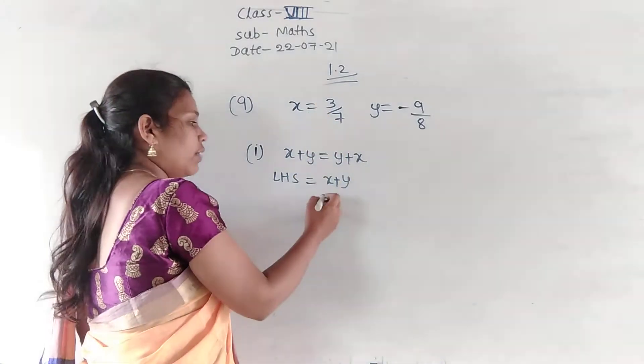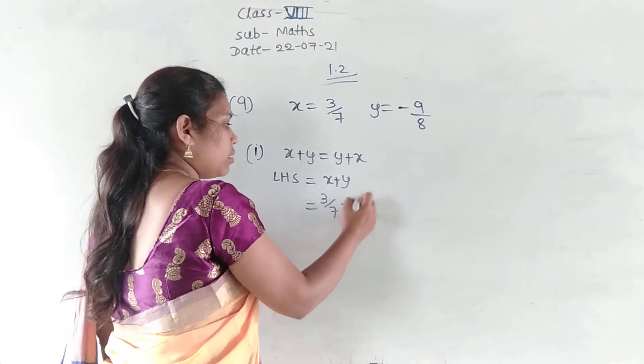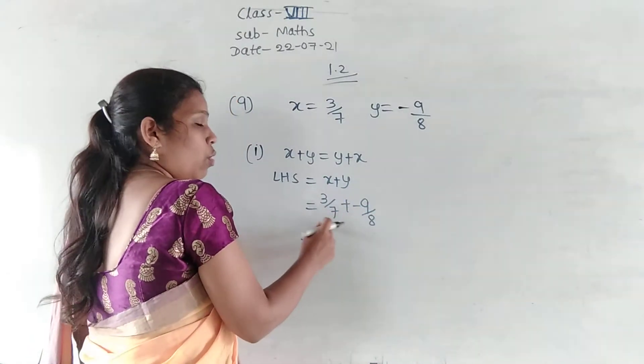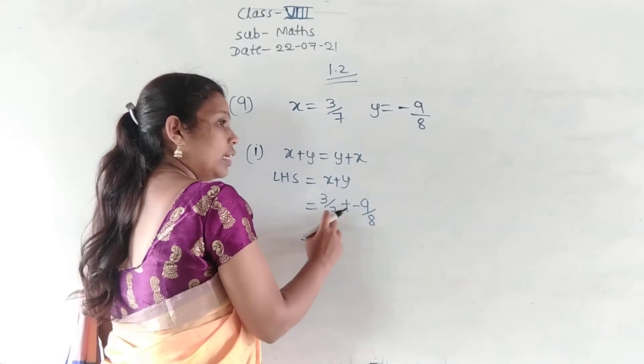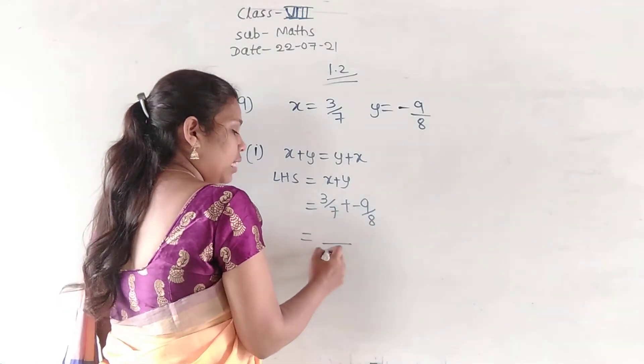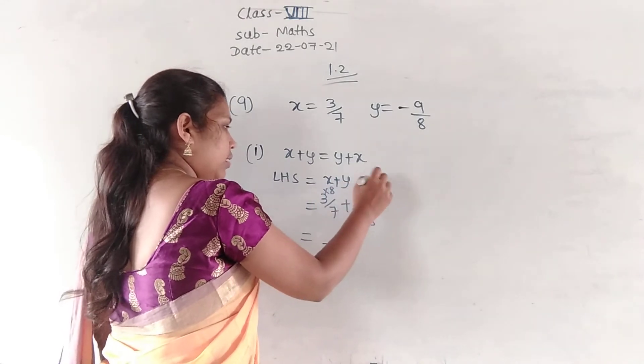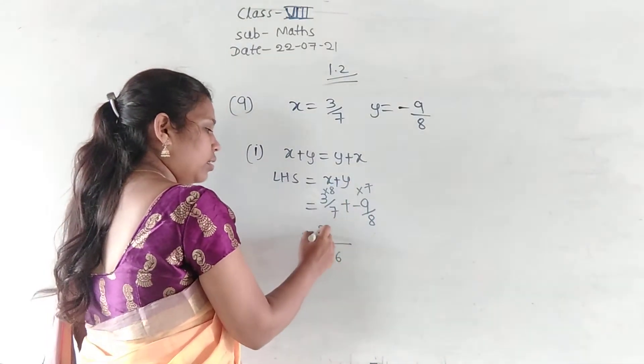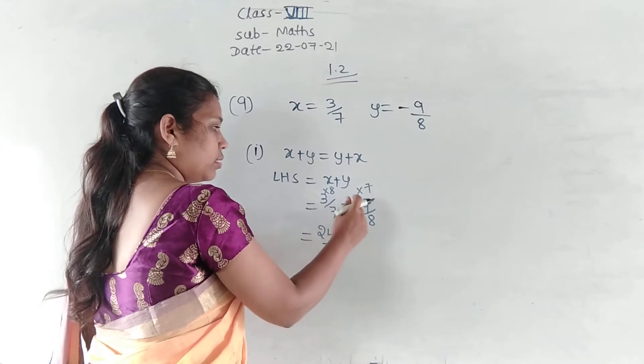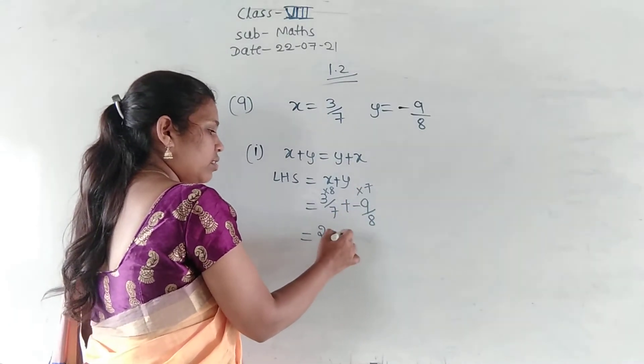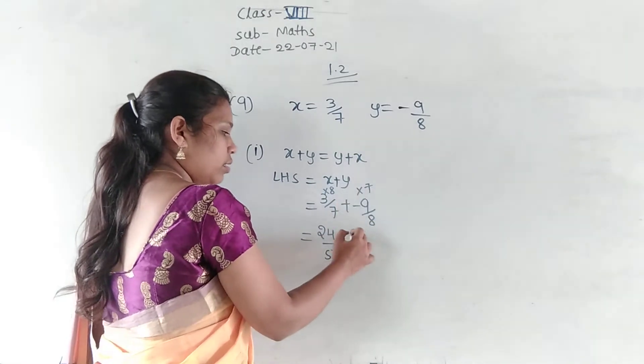Consider the LHS that is equal to x plus y. So, what is the value of x? 3 by 7. Plus y value is minus 9 by 8. What is the LCM now? 8 and 7. LCM is 56. 7 8s are 56. Here 8 7s are 56. 3 8s are 24 plus. Sorry, minus. So, plus into minus is minus. 9 7s are 63.